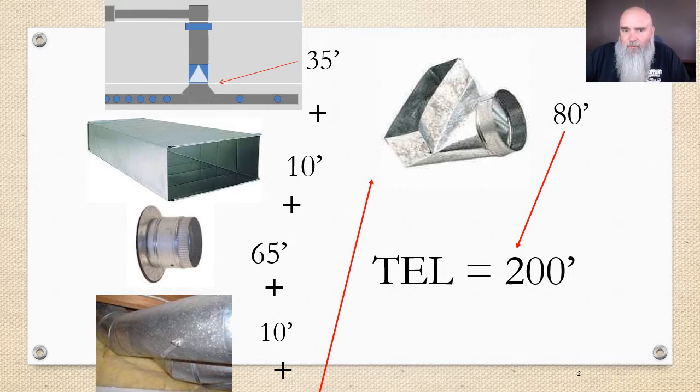To set the table, Manual D has a process where we solve for the critical path, and I'm not going through that whole explanation—seek that elsewhere. What I am going to do is drill down to one specific topic, and it is the equivalent length of a fitting at a specific velocity.